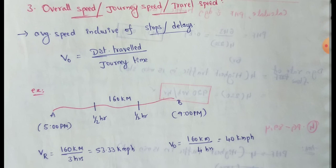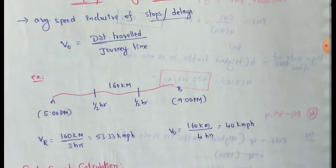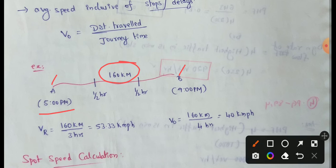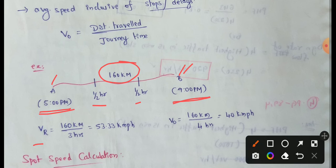Now let's look at an example problem to calculate running speed and overall speed. Two cities A and B are at a distance of 160 km. The vehicle travels with a few stops along the way.